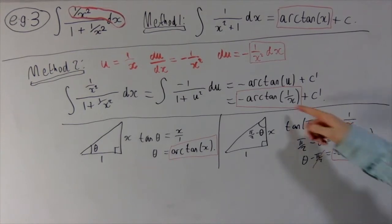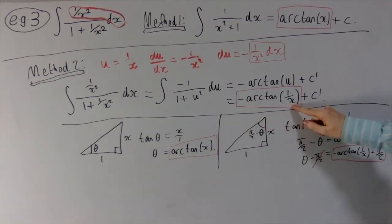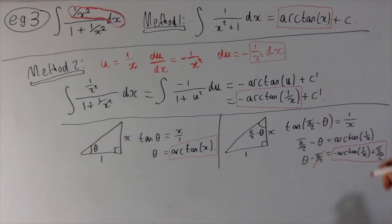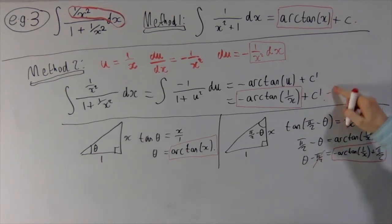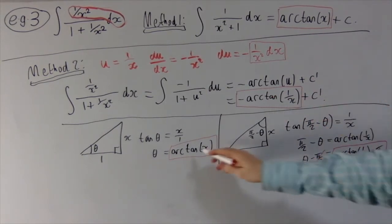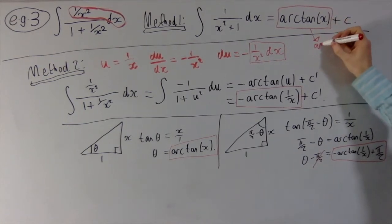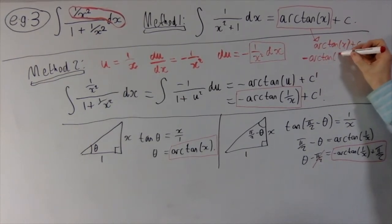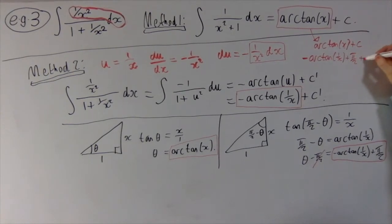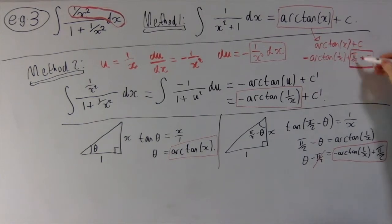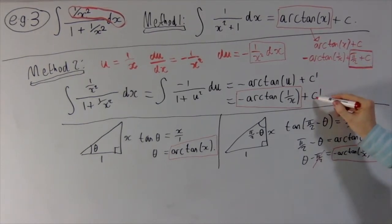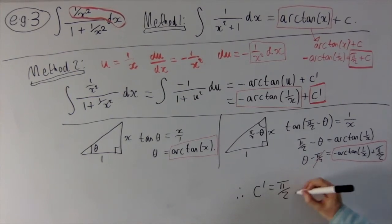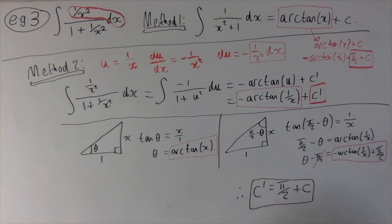This holds at least when x is positive. Notice that negative arctan(1/x) isn't well defined when x is zero, so we have to avoid a neighbourhood of zero. Using this identity, arctan(x) equals minus arctan(1/x) plus pi/2, so arctan(x) plus c equals minus arctan(1/x) plus pi/2 plus c. This means c dash equals pi/2 plus c, at least when x is greater than zero.